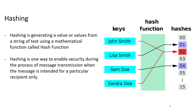In indexing, basically we have a hash function. We give a particular name to the hash function and it will generate a hash value. Then it stores this value into the hash table. Next time, if you are searching for 'Lisa Smith,' it would check in the hash function what value was generated, and then it will directly go in the hash table, search, and return the value.